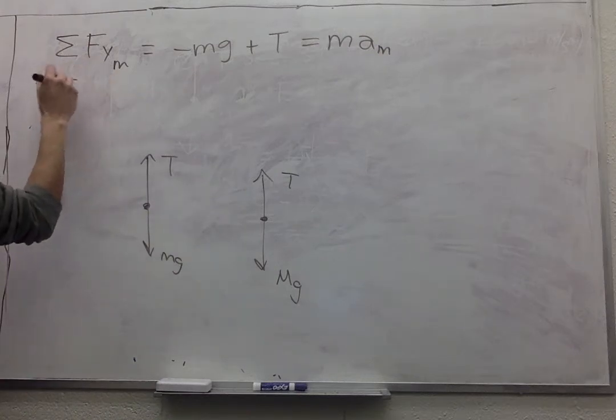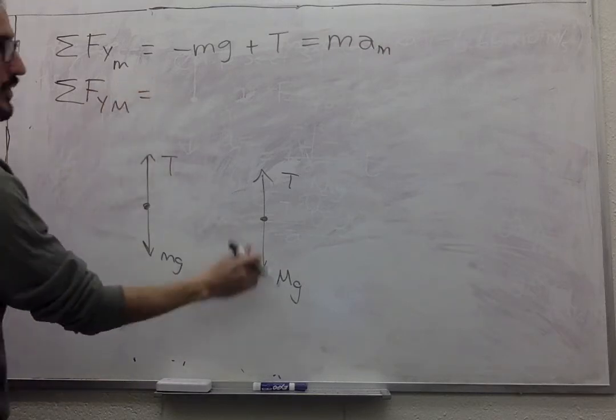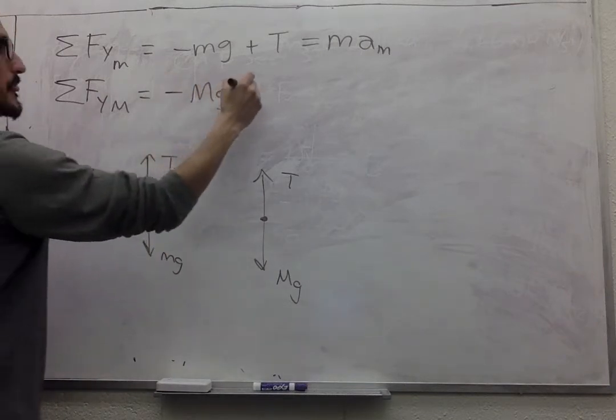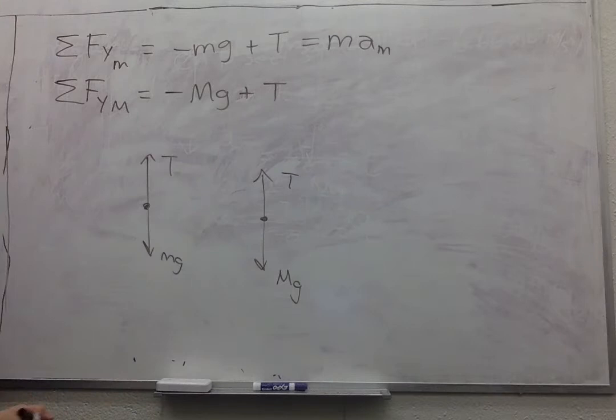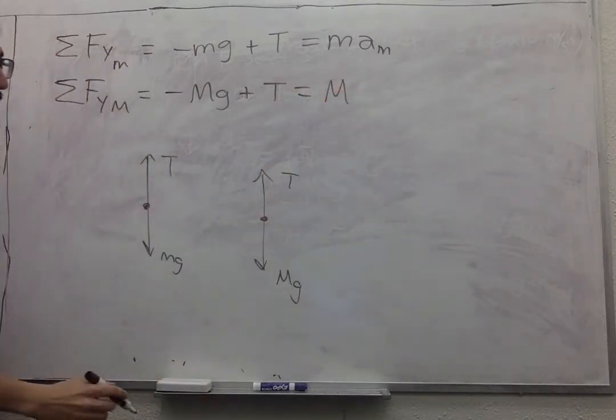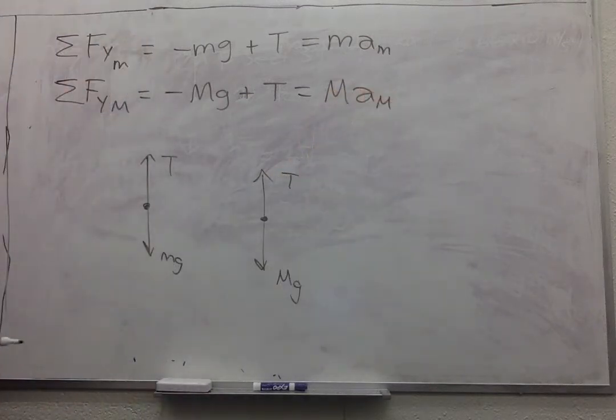And then you have sum of forces in Y for big M. And they look pretty similar, so you have minus Mg plus tension equals big M times acceleration of big M.